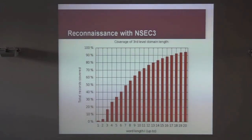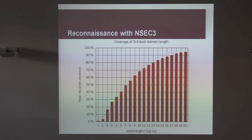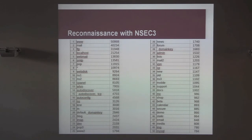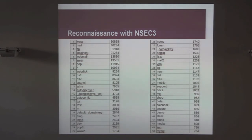Continuing that thought — for a brute-force length of five characters, you'd cover a bit more than 30% of all records. That's quite significant, considering that guessing five-character names is very easily done even on simple hardware. The compiled dictionary shows common entries in practice: 'www' at the top, followed by things like cpanel, webdisk, shop, calendar, secure, and so on.